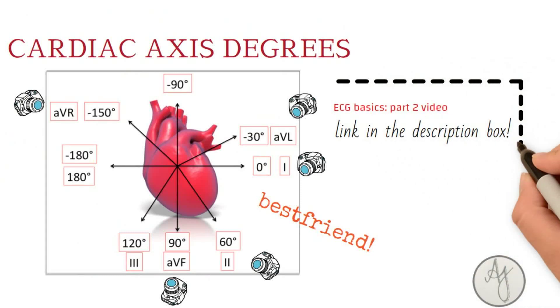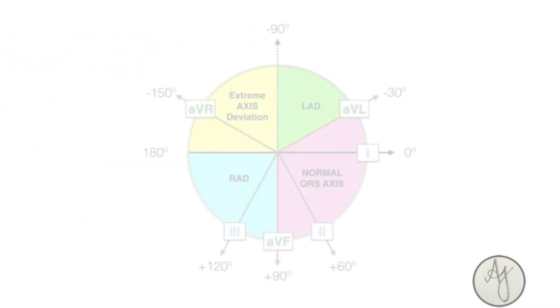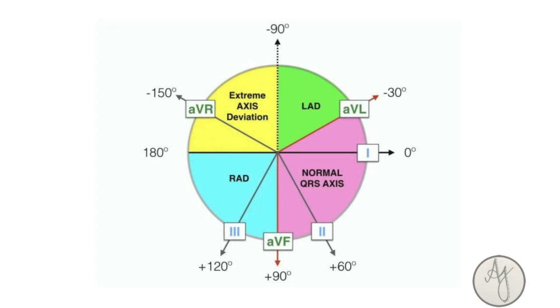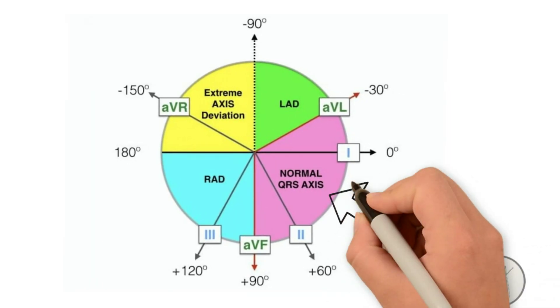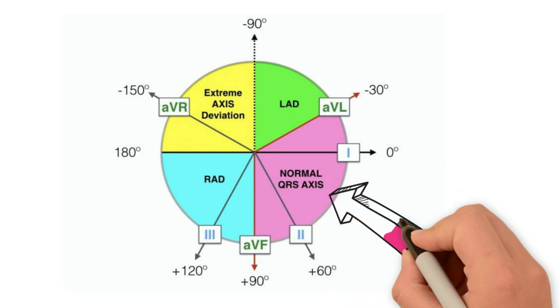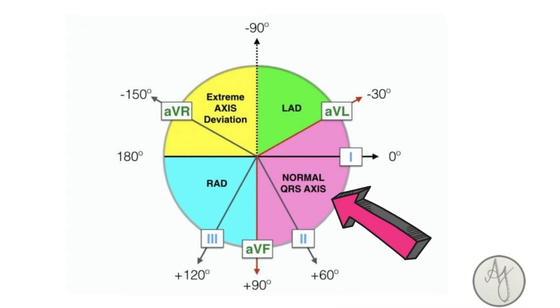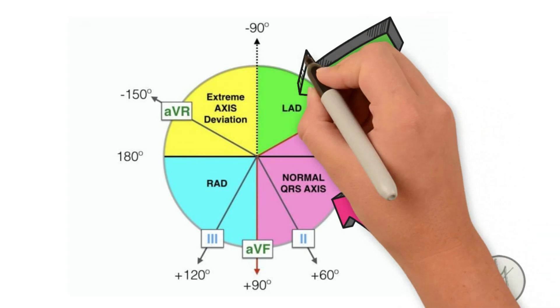What is normal axis here? Anything between a negative 30 and a positive 90 is normal. So minus 30 to 90 degrees is normal. A left axis deviation is anything which is left of minus 30. A right axis deviation, anything which is right of 90 degrees.